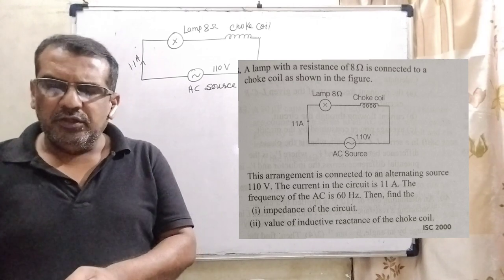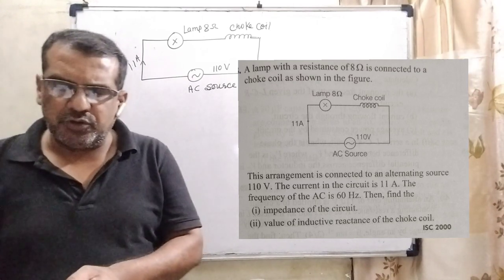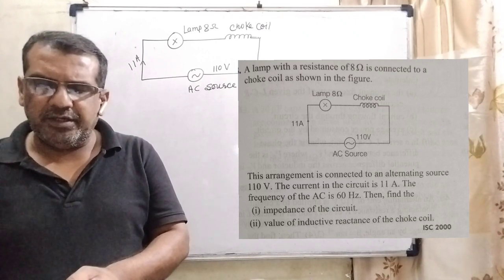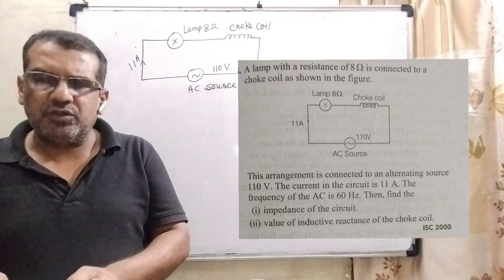Then find the, here, two sub-questions are given in this question. First, impedance of the circuit. And second, value of the inductive reactance of the choke coil.